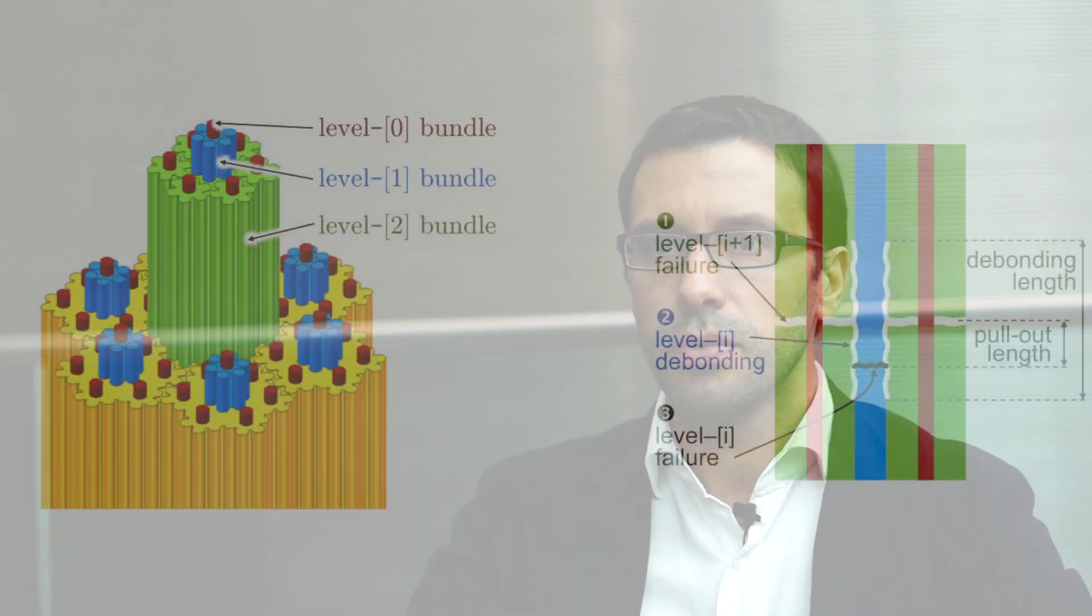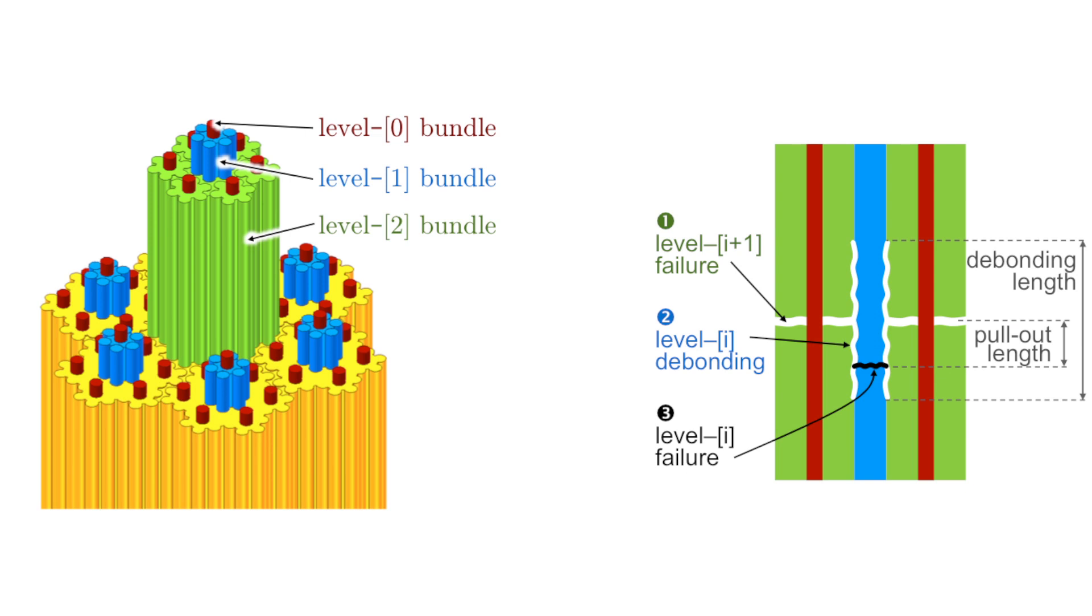On its own, the stochastic size-dependent strength model was something new. But we then thought, what if we postulated a quasi-fractal morphology for the fracture surface and then calculated its dimensions at each scale using the previous strength model and fracture mechanics.